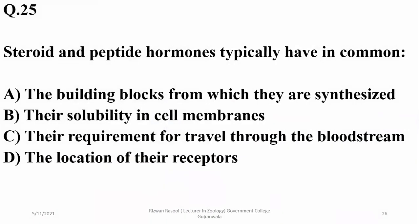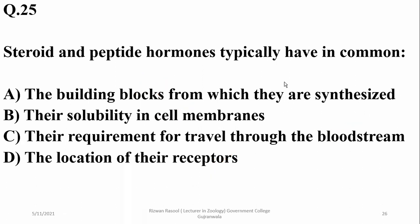What do steroid and peptide hormones typically have in common? Their building blocks vary, so A is not correct. Their solubility in cell membranes is different — steroids are soluble but peptides are not. Their requirement for travel through the bloodstream is a common requirement for all types of hormones. The location of receptors is also variable: peptide hormones have receptors outside the cell, while steroid hormones mostly have receptors inside the cell. So C is the right option.